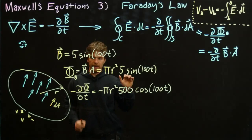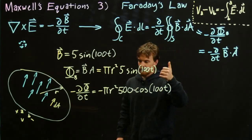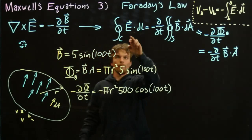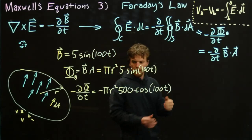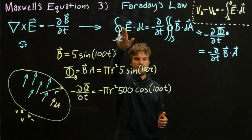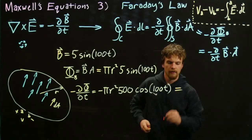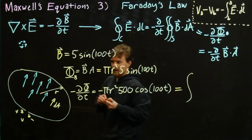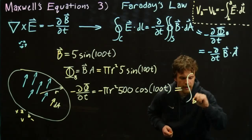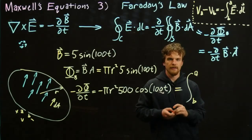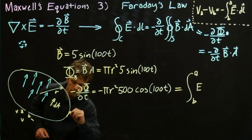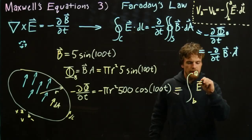The right-hand rule says: if we define the differential area pointing this way, then we take the thumb of our right hand pointing in the direction of our differential area, and the way our fingers curl is the way we integrate the line around the edge. So now we have a term for the negative derivative of the flux, and we set it equal to the line integral. According to the right-hand rule, we want to go from B to A, so this is the integral from B to A of E·dL.